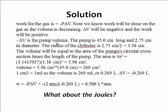Negative delta V is the pump volume change, equal to the pump volume. In this case, the pump is 45 centimeters long and 2.75 centimeters in diameter. The radius of the cylinder is 2.75 centimeters over 2, or 1.38. The volume will be equal to the area of the pump's circular cross-section times the length of the pump. The circular cross-section is pi times the square of the radius, or 5.98 centimeters squared. Notice units of 1.38 centimeters get squared in this case. Pi has no units. We multiply 5.98 centimeters squared times 45 centimeters, and we have a volume of 269 centimeters cubed for the pump.